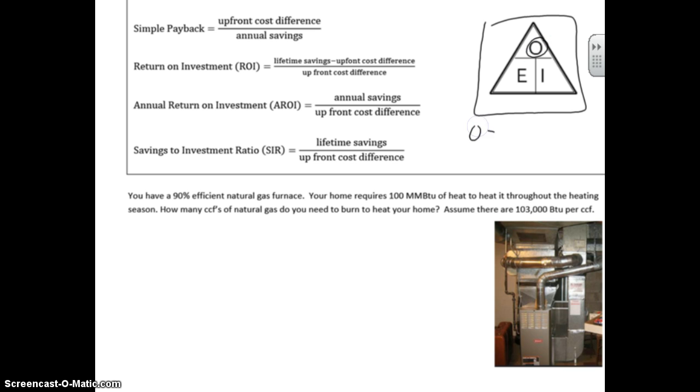Output equals efficiency times input. That's why efficiency and input are next to each other, efficiency times input.